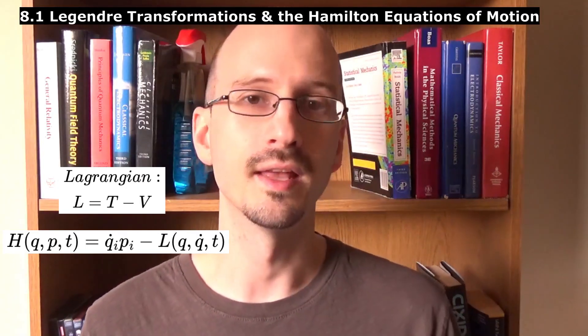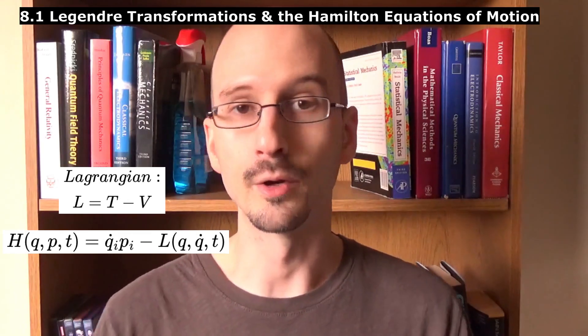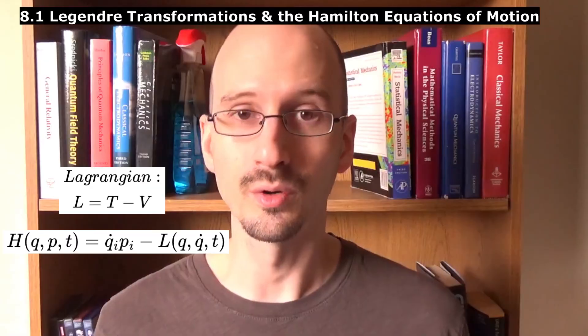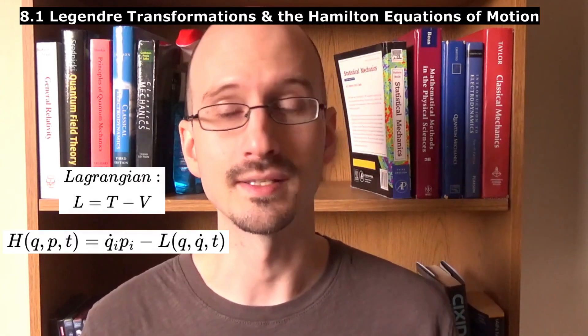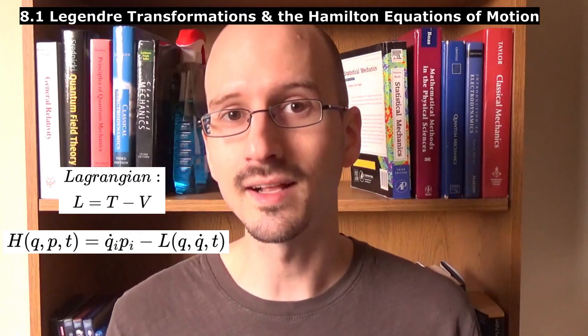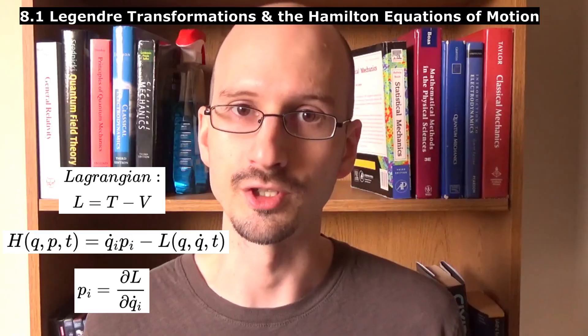Now it's significant to note that the positions and momenta are independent and orthogonal. That means they can function as separate coordinates, which is why phase space and the Hamiltonian method works. Once we've used this conversion, we may still have velocities in the equation, so we can convert them to momenta using this equation.